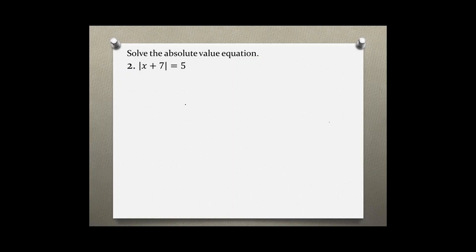Solve the absolute value equation, problem number two: the absolute value of x plus 7 equals 5. Because the absolute value is always positive, we're going to get two different versions of this absolute value equation. The first one would be x plus 7 equals negative 5, and the second one would be x plus 7 equals positive 5.